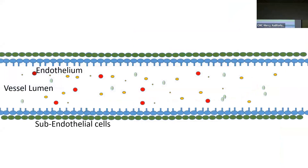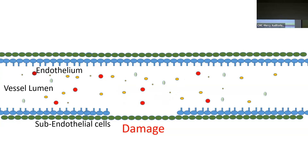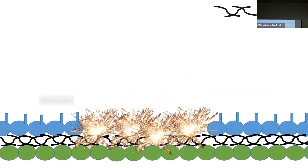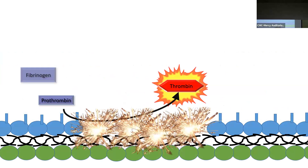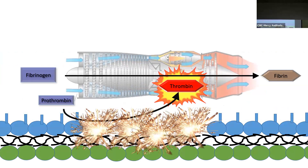Let's focus in on a blood vessel. Baseline, uninjured, we have all these coagulation factors floating around but no clots forming. If there is an inciting event — such as trauma, infection, or surgery — that damages the endothelium, it can expose the subendothelial cells and promote the spark that leads prothrombin to be converted into thrombin. Active thrombin is what converts fibrinogen into fibrin.